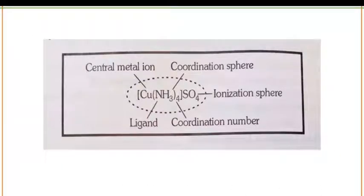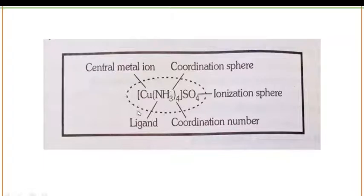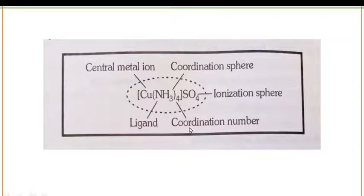As you can see in this example, the compounds present inside the square bracket are known as the coordination sphere or non-ionizable ions. The ions present outside the square bracket are known as the ionization sphere. The total number of ligands present in a compound tells you the coordination number — as you can see here, there is a coordination number of four and the ligand is NH3.